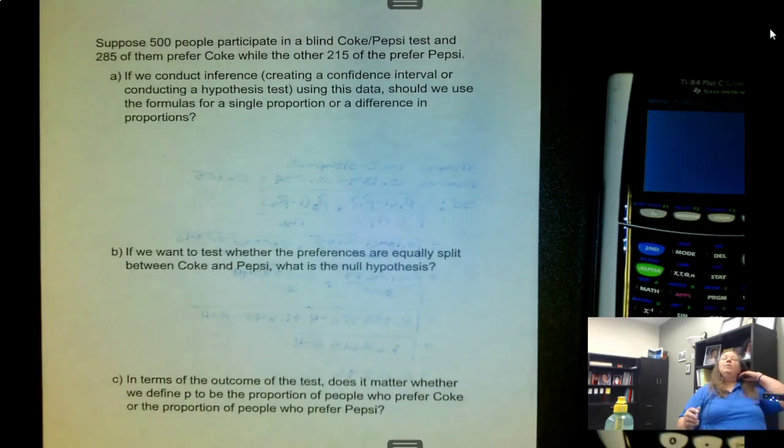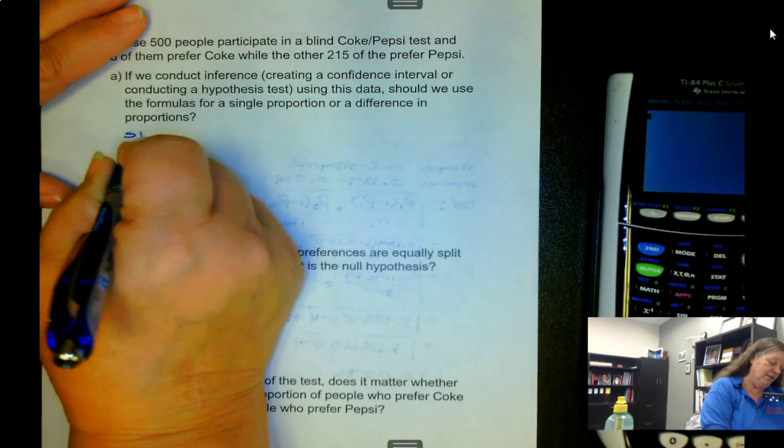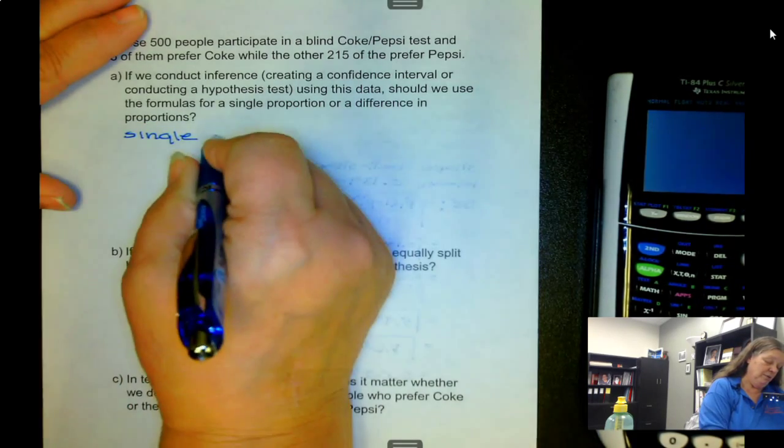Now let's look at this problem. We have 500 people participating in a blind Coke-Pepsi test, 285 prefer Coke, the other 215 prefer Pepsi. We want to conduct inference, either creating a confidence interval or conducting a hypothesis test using this data. So should we use the formulas for a single proportion or a difference in proportions? In this case, it's going to be a single sample proportion.